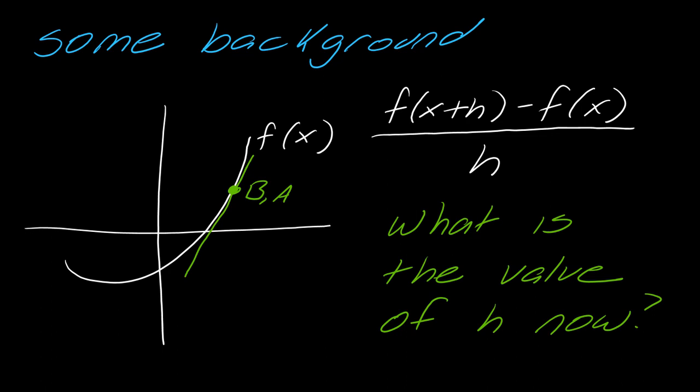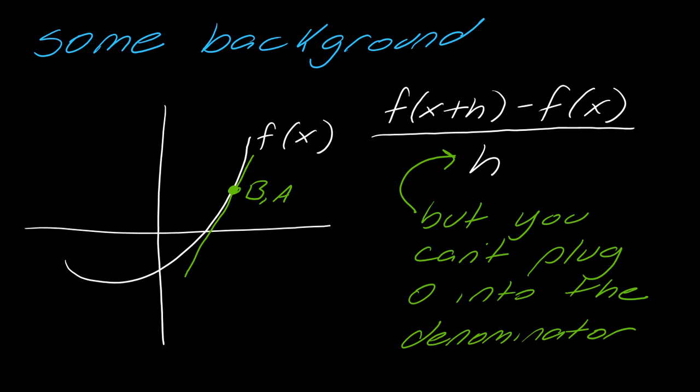What is the value of h now? So h is that distance between the two points. Well, if you look at it, this distance between the points, it looks like it's zero. Ideally, actually it would be zero. And there's a problem with that, right?